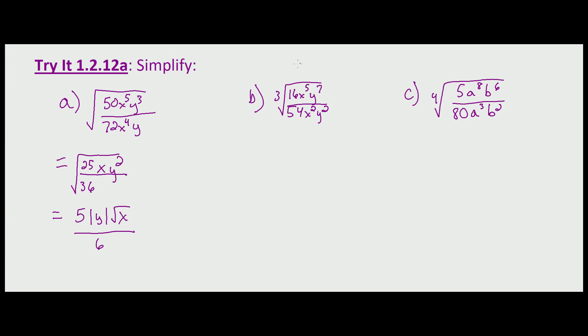Part b, we're looking at a cube root, so first let's simplify what we can under the radical. 16 and 54 are both divisible by 2, so 16 divided by 2 is 8, 54 divided by 2 is 27. X to the fifth over x squared is x to the 5 minus 2, which is x cubed. And then y to the seventh over y squared is y to the 7 minus 2, or y to the fifth. That can simplify into—let's go ahead and break this one apart into factors since we're dealing with cubes—that's the cube root of 8x cubed y cubed times y squared over 27.